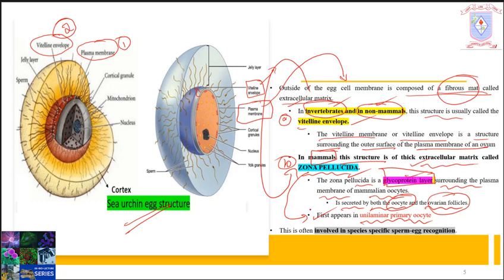What is the function of the vitelline envelope in invertebrates and non-mammals, and the zona pellucida in mammals? This is often involved in species-specific sperm-egg recognition.